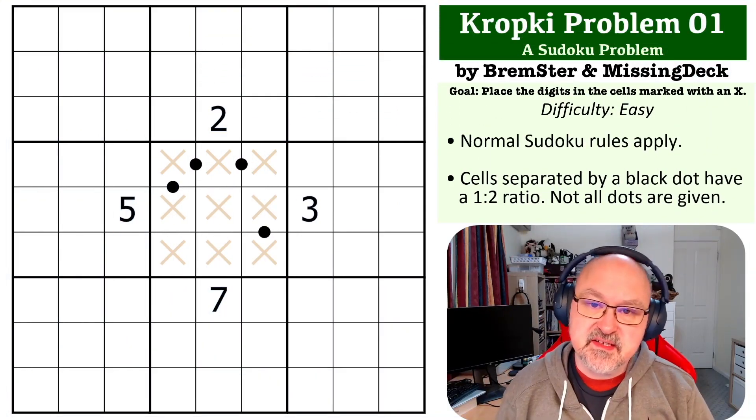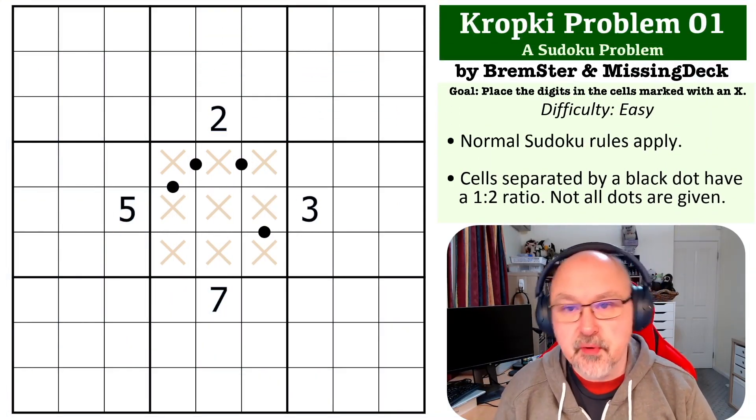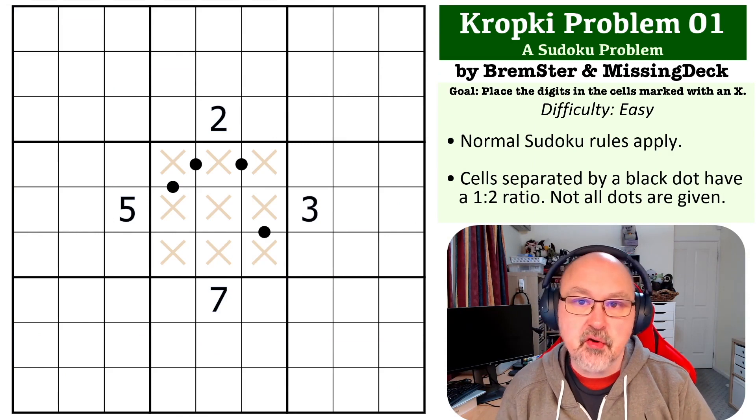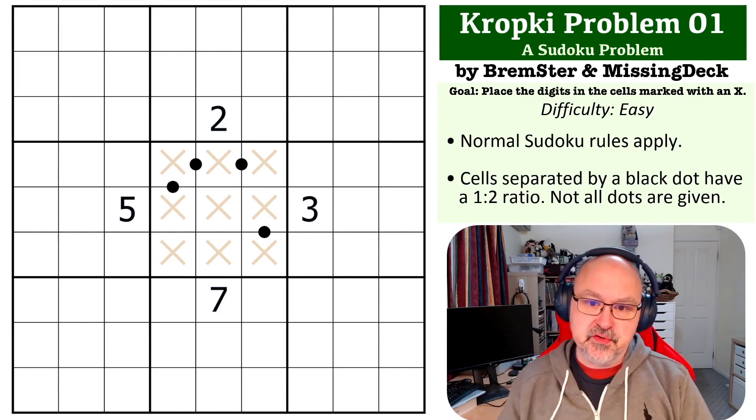Hey, this is Bremster and this is the next puzzle in the Sudoku Problems series. This is a Kropki problem with ratio dots.